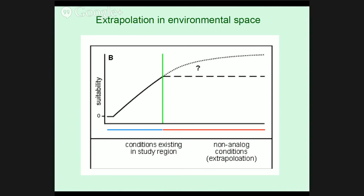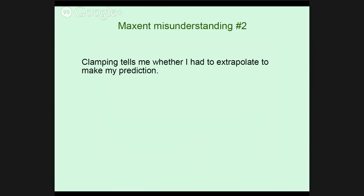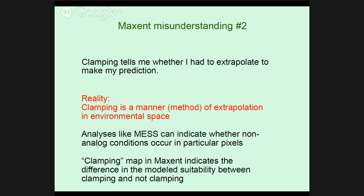It gets even trickier when your response is truncated at a point where it's still increasing. Is it realistic to think that the species' suitability response is going to go up and up indefinitely? Well, probably not. When are you actually safe in extrapolation? Probably only when your response is truncated at a value of very low suitability. This leads to MaxEnt misunderstanding number two: 'Clamping tells me whether I had to extrapolate to make my prediction.' Kind of yes, kind of no. In reality, clamping is simply a method of extrapolation in environmental space — it's one of the options of how to extrapolate if you have to do so.